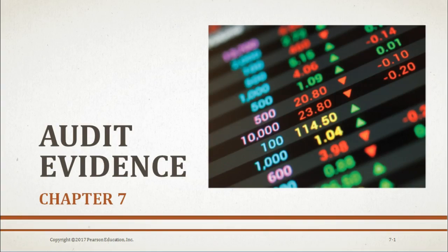In Chapter 7, we will discuss the types of evidence decisions auditors make, the evidence available to auditors, and the use of that evidence in performing audits and documenting those audit results.